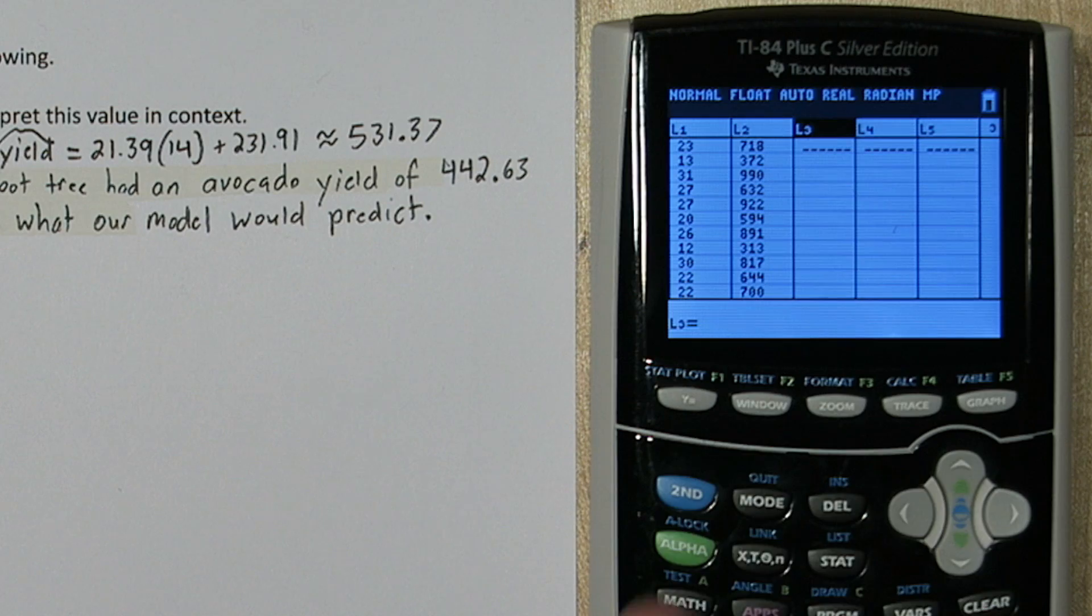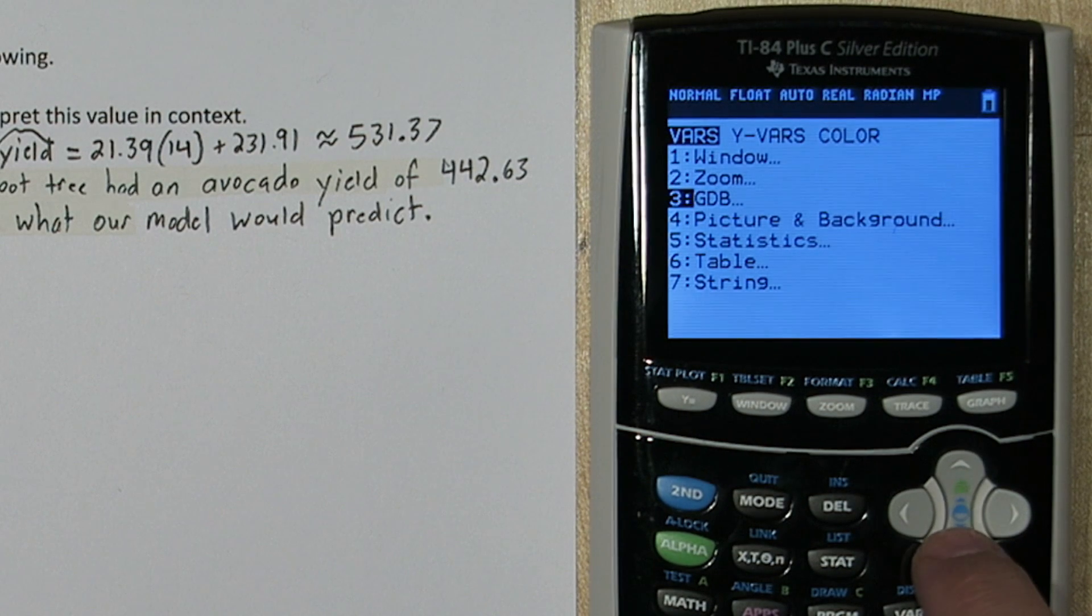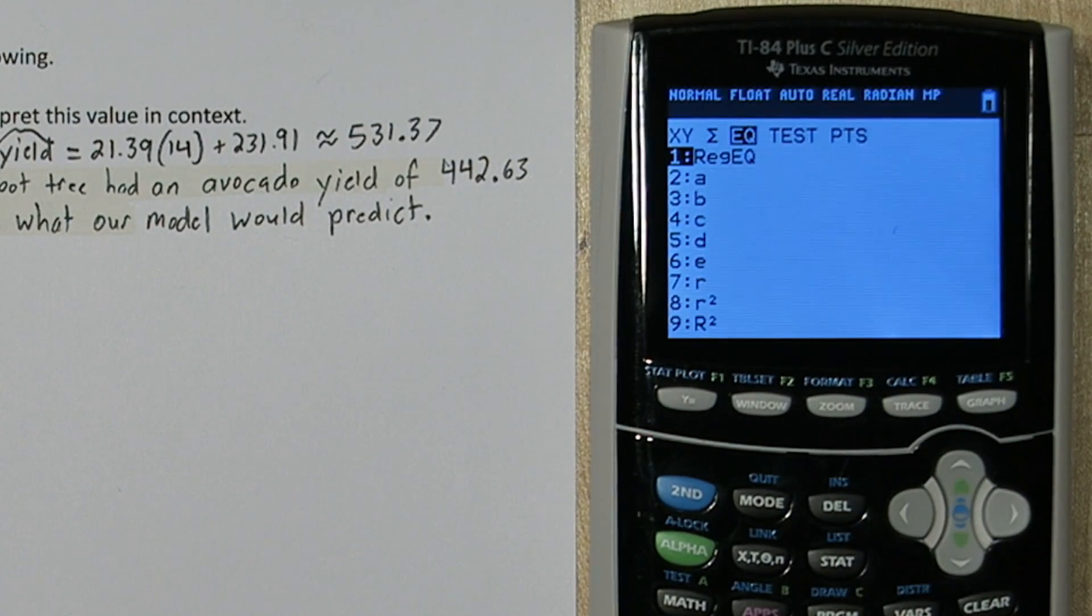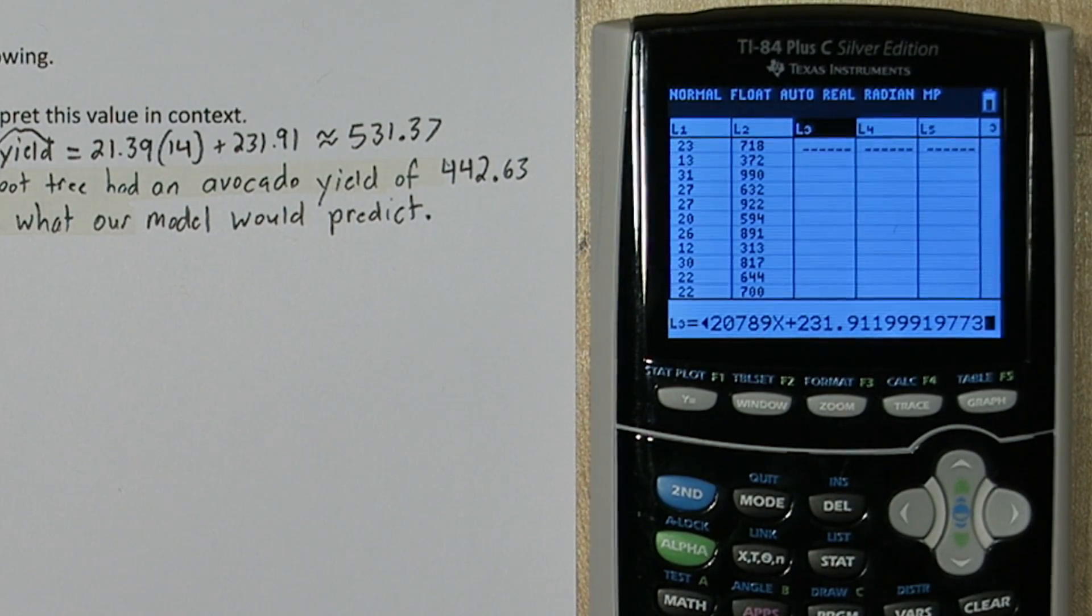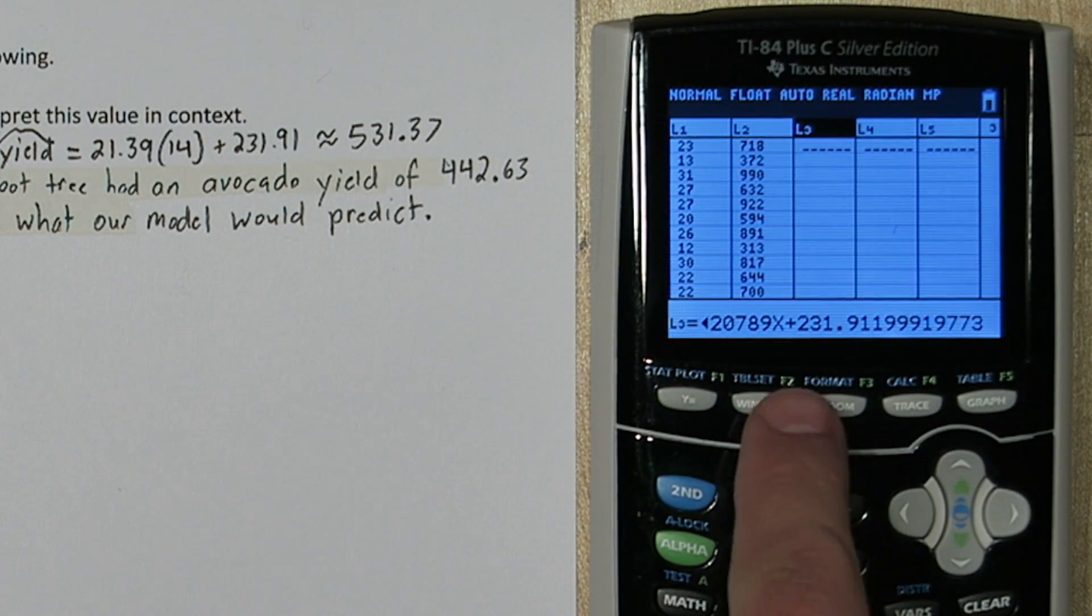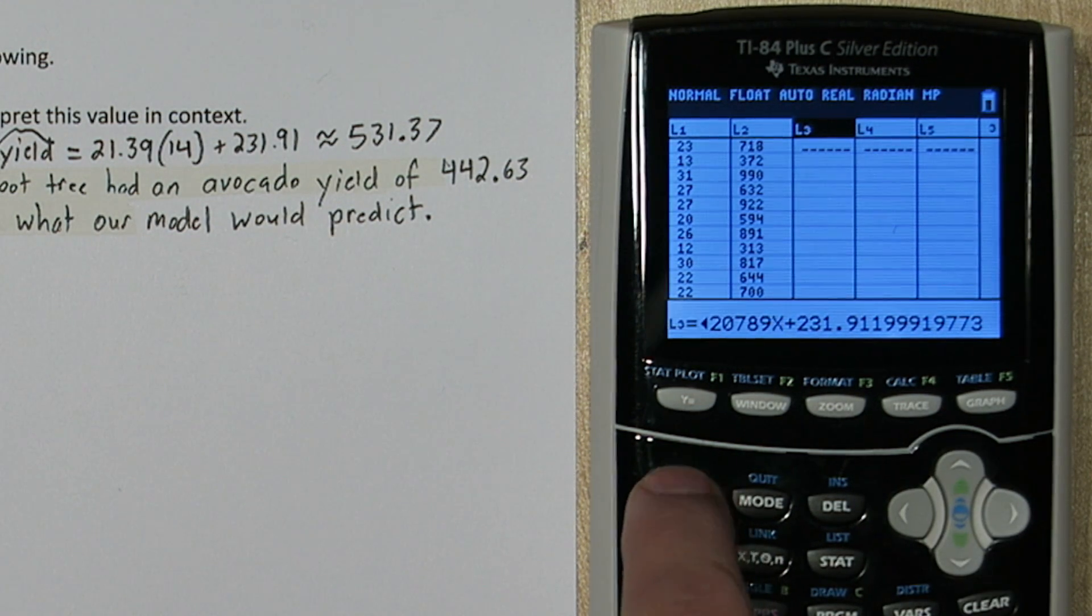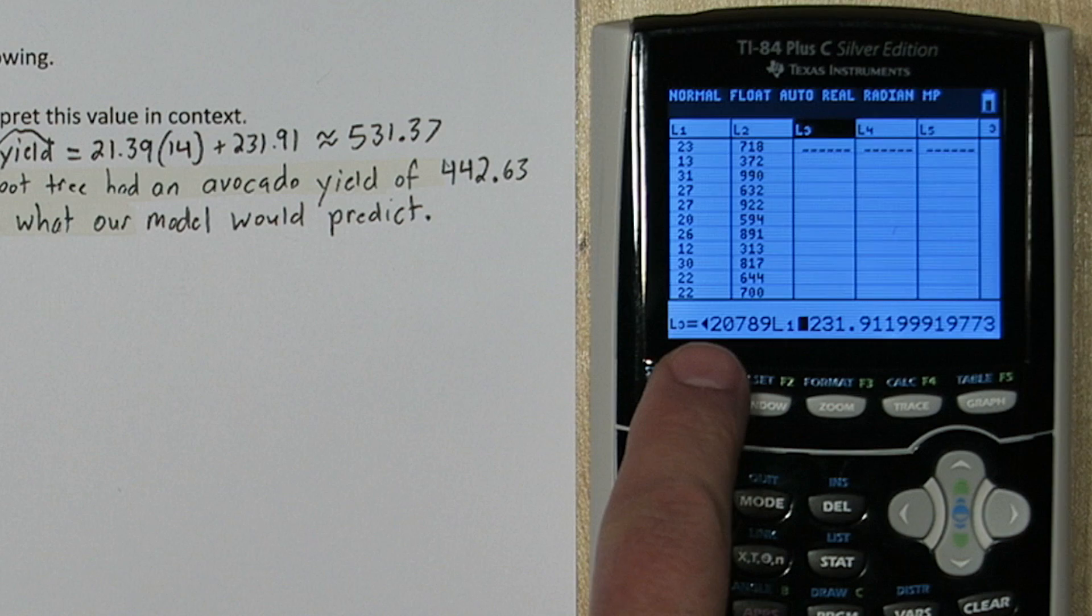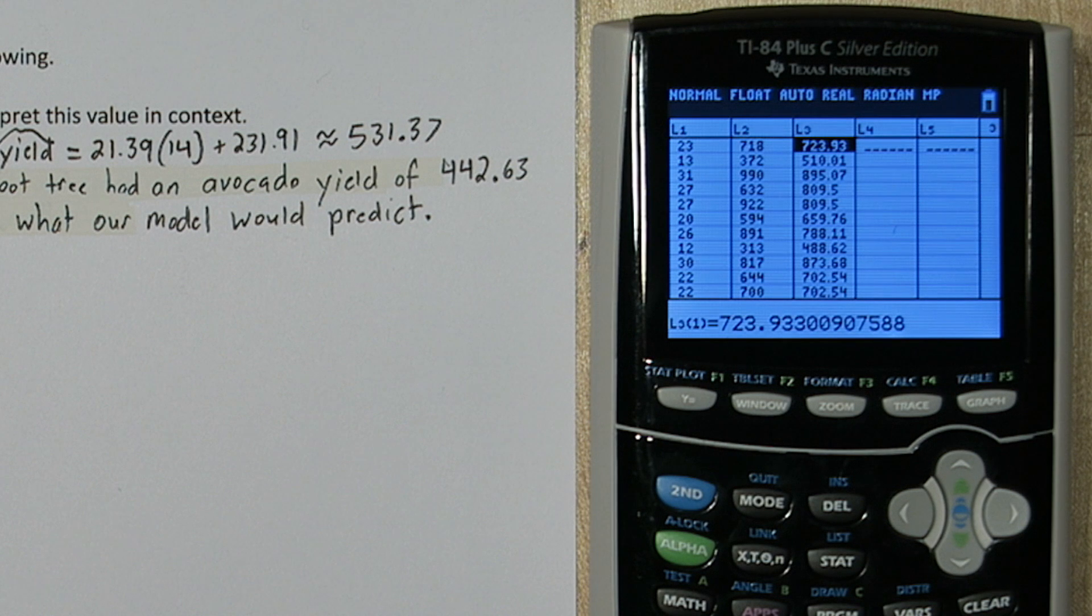So to do this, press up. Now list 3 is highlighted and this is our function bar down here. So if you press vars and you go down to statistics and you go over to equation, the first option is reg equation, our regression equation. So when we press enter there, it actually pastes our regression equation right down in the function bar. Now the only thing we need to do is see where this x is. We need to replace that with list 1. So we'll highlight x and press second 1. And what that's going to do is take each of our tree heights in list 1, multiply it by our slope, and then add our y-intercept. So when I press enter, here's all of our predicted values, or our expected values.